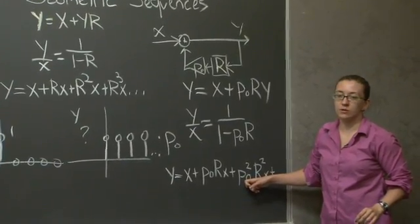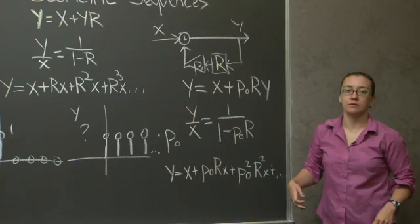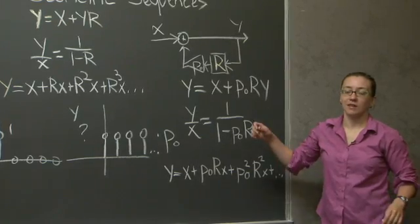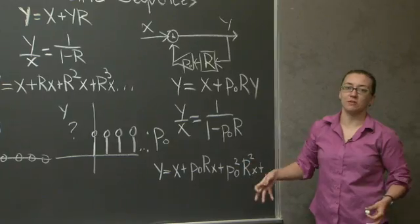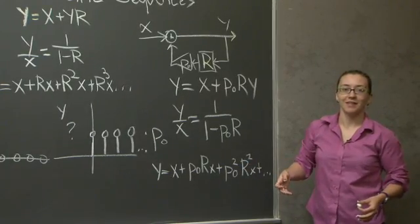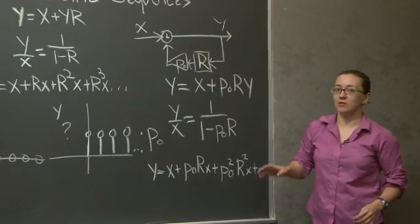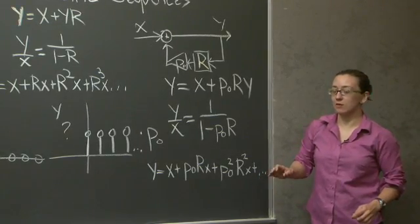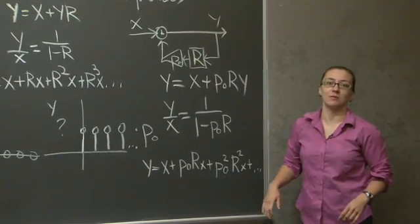Whatever p zero converges to is what my system is going to converge to. So using my knowledge of p0, I can make long-term predictions about the behavior of the system. Next time I'm going to go over some general classifications of those behaviors for the system, and how to more effectively use our knowledge of p0, and how to deal with things like second-order systems.